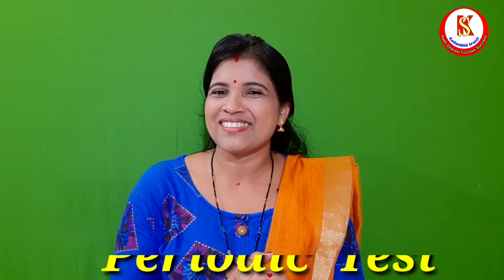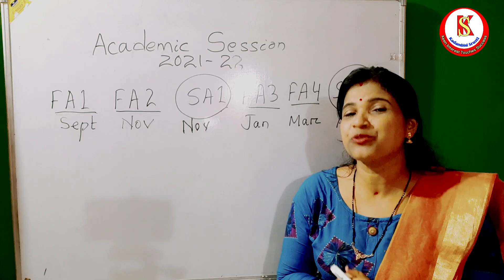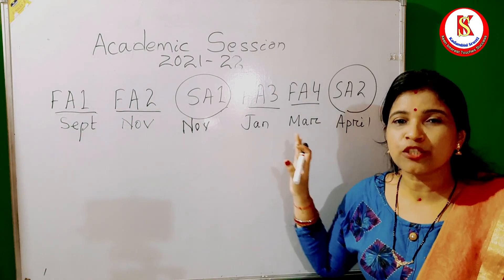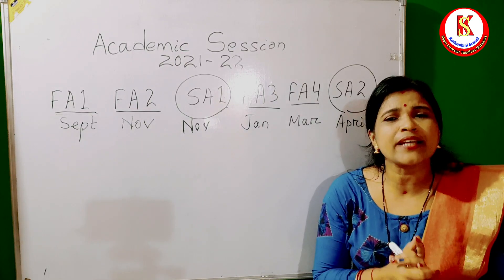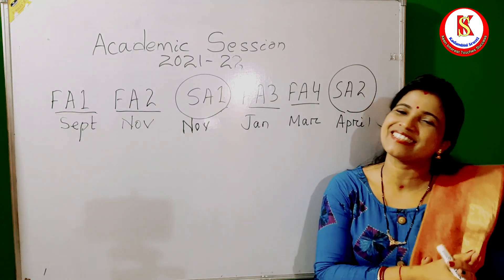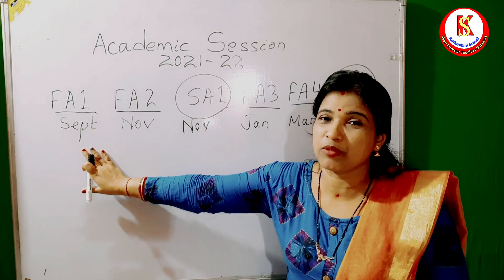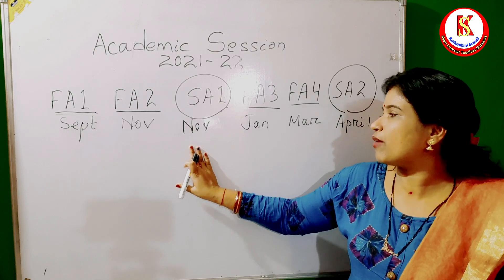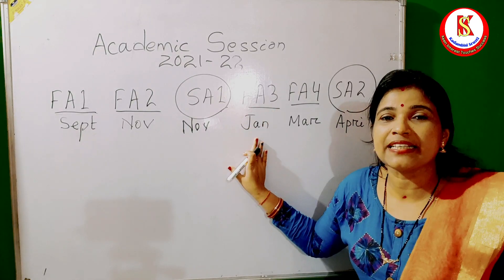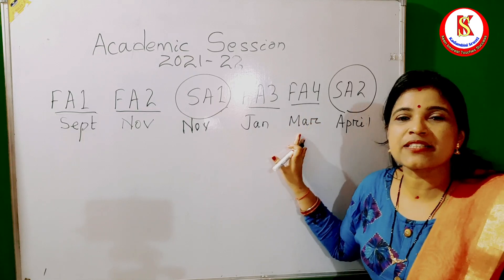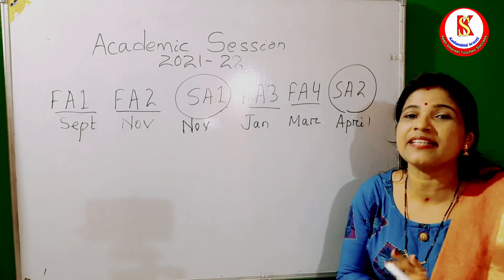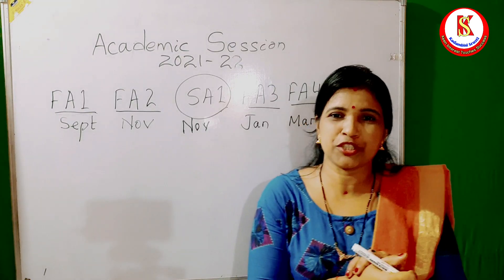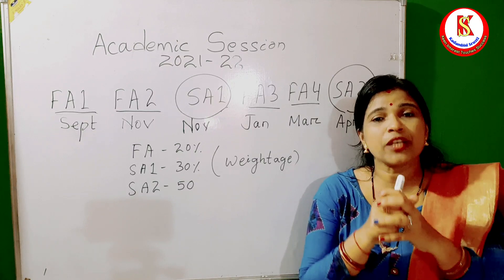For academic session 2021-22, there will be six assessments: four formative assessments and two summative assessments. Formative assessment one is in the month of September, two in November, summative assessment one in November, formative assessment three in January, formative assessment four in March, and finally summative assessment two in April. These are the time schedules.